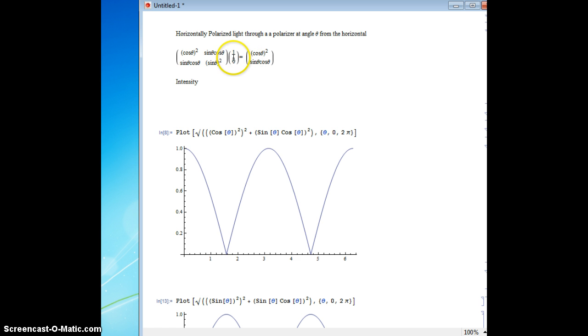So what we got is we've got horizontally polarized light, and then I'll do vertically before, and it's put through a polarizer angled at an angle theta. The matrix is pretty easy to calculate.